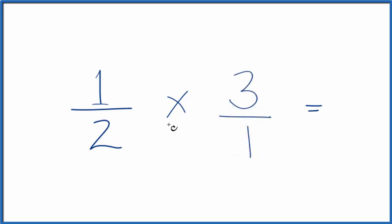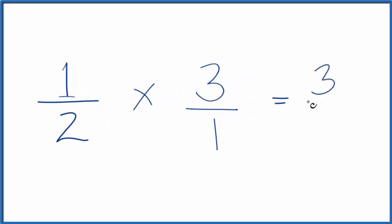Then we can figure out one-half of three. So one times three, that's three. Two times one, that's two. So one-half of three, that's three-halves.